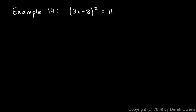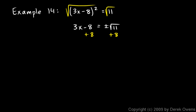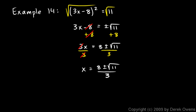Example 14: 3x minus 8 squared equals 11. So let's square root each side. On the left that gives me 3x minus 8, and on the right plus or minus the square root of 11. We're trying to solve for x, so we need to add 8 to each side. The negative 8 and positive 8 cancel out, so we have 3x equals 8 plus or minus the square root of 11. Now we'll divide both sides by 3, and we get x is equal to 8 plus or minus the square root of 11 over 3. That can't simplify any further — that's our answer.